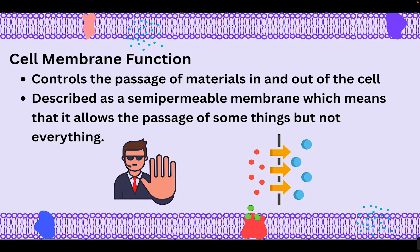The general function of the cell membrane is to control what comes in and goes out of the cell. This keeps what we call homeostasis — a balance of the internal environment of a living cell or even a living organism. The cell membrane is described as a semi-permeable membrane. Permeable means to pass and semi means some, so some things can pass but not everything. This helps regulate the size of our cells, the nutrients, the levels of things in and outside of the cell to keep the organism and the cell itself in balance.